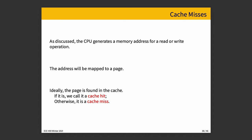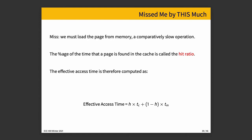Doing a load from memory in the event of a miss is a comparatively slow operation, and we would prefer not to do it unless we have to. To calculate how well we're doing, we can figure out the average time to get some data if we know a few things: the hit ratio — how often the thing we're looking for is found in the cache — and measurements for how long it takes to load from cache versus from memory.